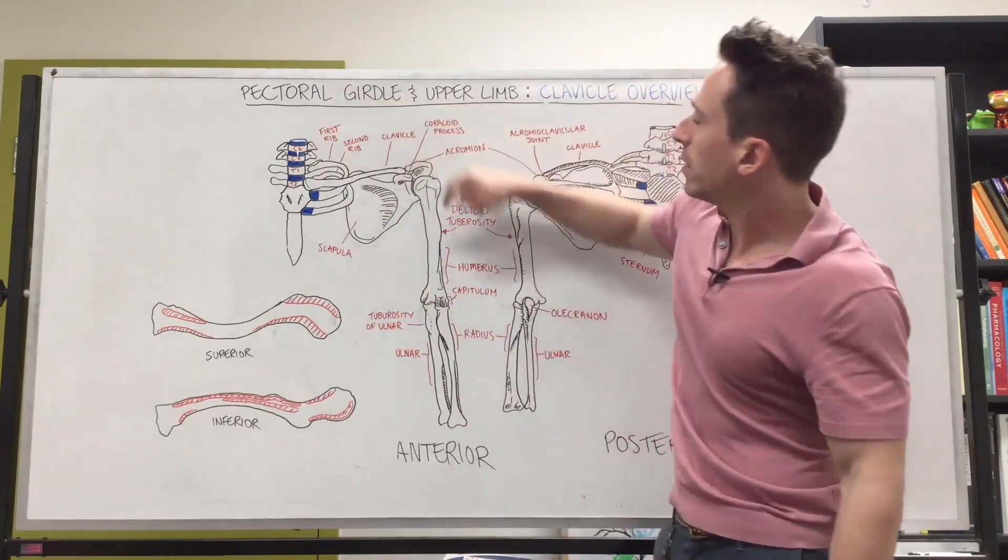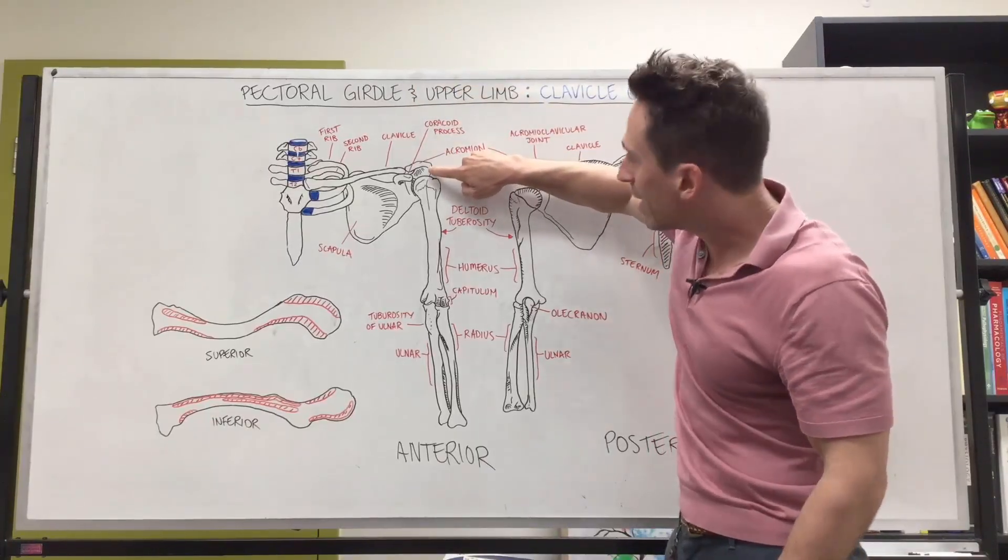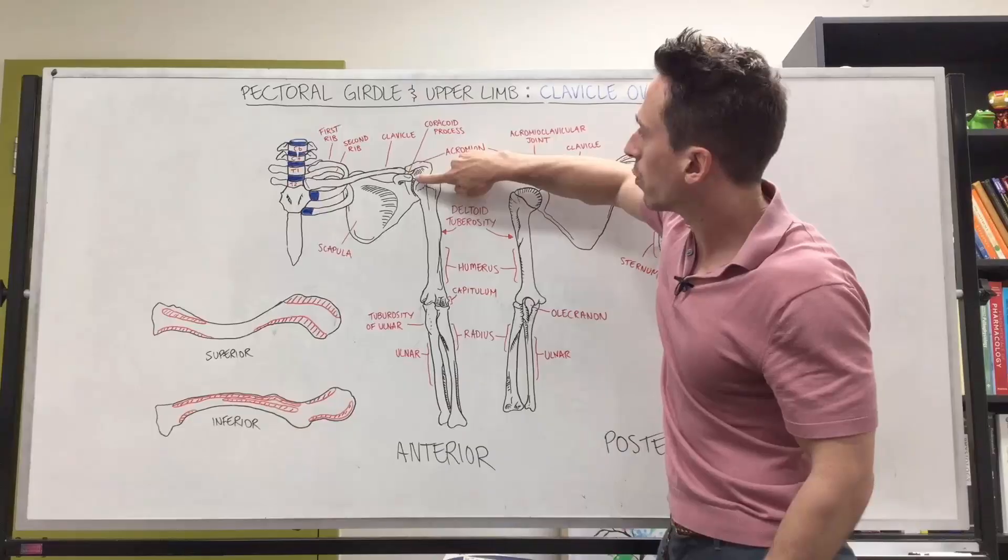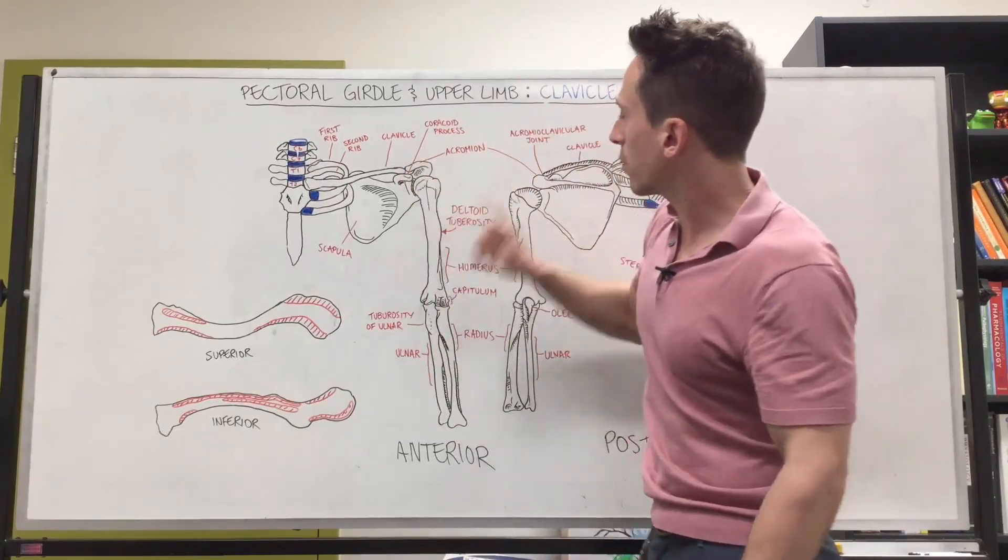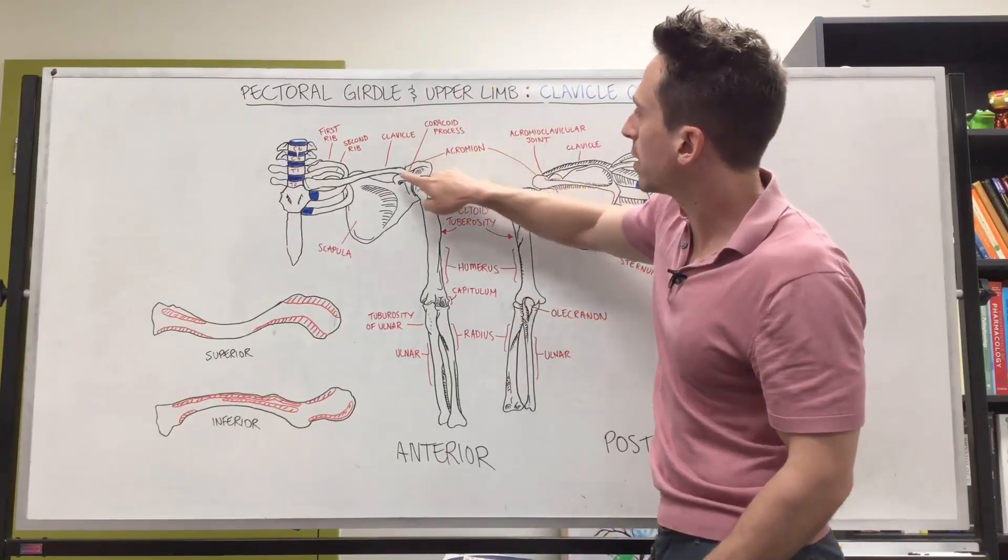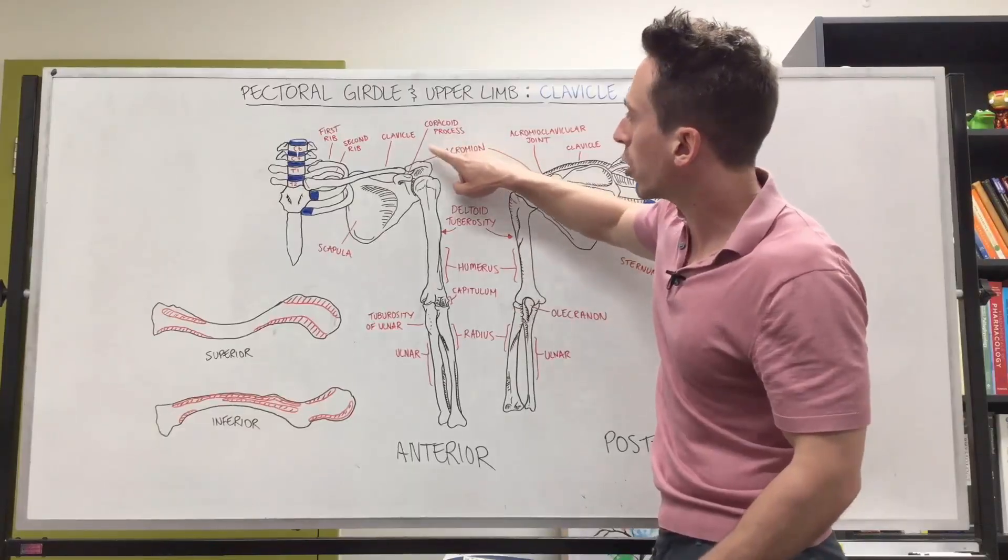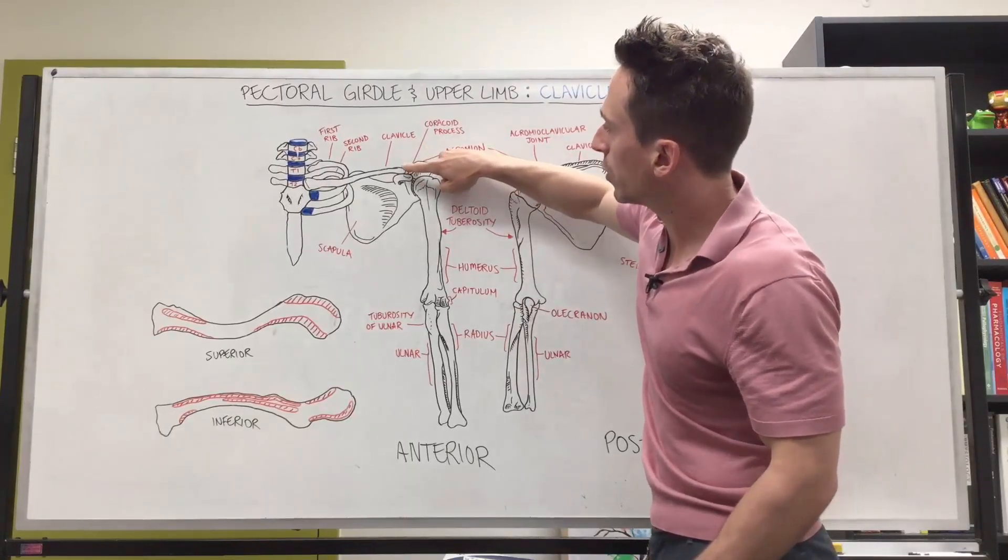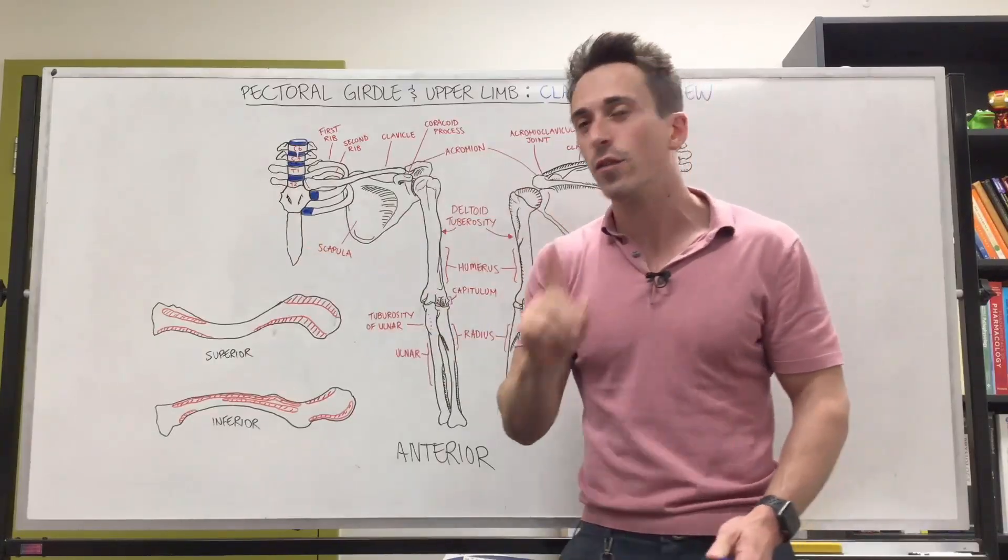On the lateral end, you'll see that the clavicle is going to connect with the acromion, and the clavicle is going to connect with the coracoid process. And again, there are ligaments here that hold them together. In actual fact, you're going to find that there's acromioclavicular ligaments holding those two together. There's going to be what we call coracoclavicular ligaments, which hold the clavicle to the coracoid process. There's actually two, and I'll talk about them in a future video.